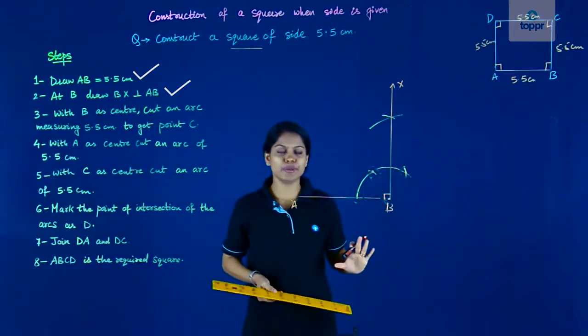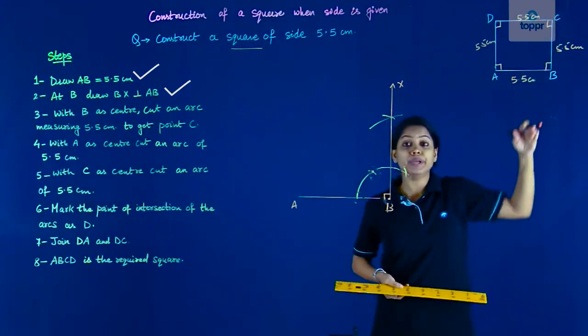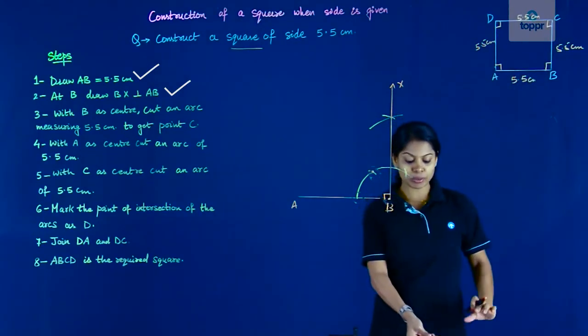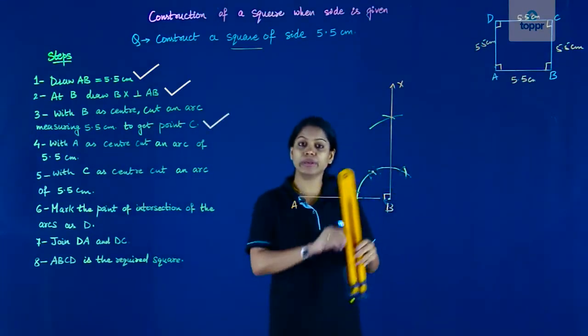But I do not need the whole of BX. Now where is C? C is at a distance of 5.5 on the perpendicular line from B. So let me locate C. So I'm going to measure 5.5. I need not do it again on the ruler.